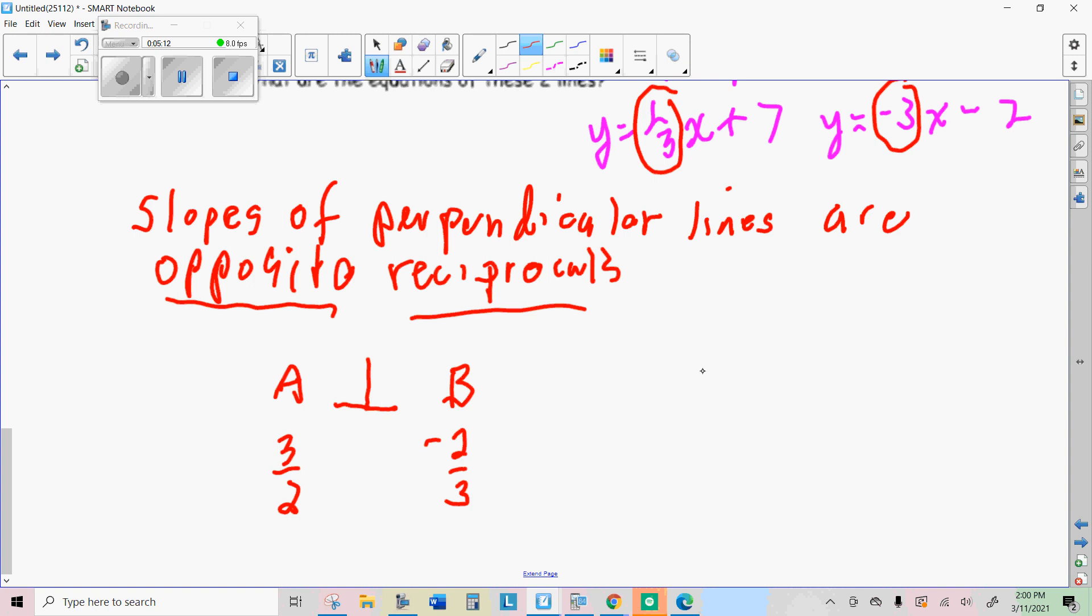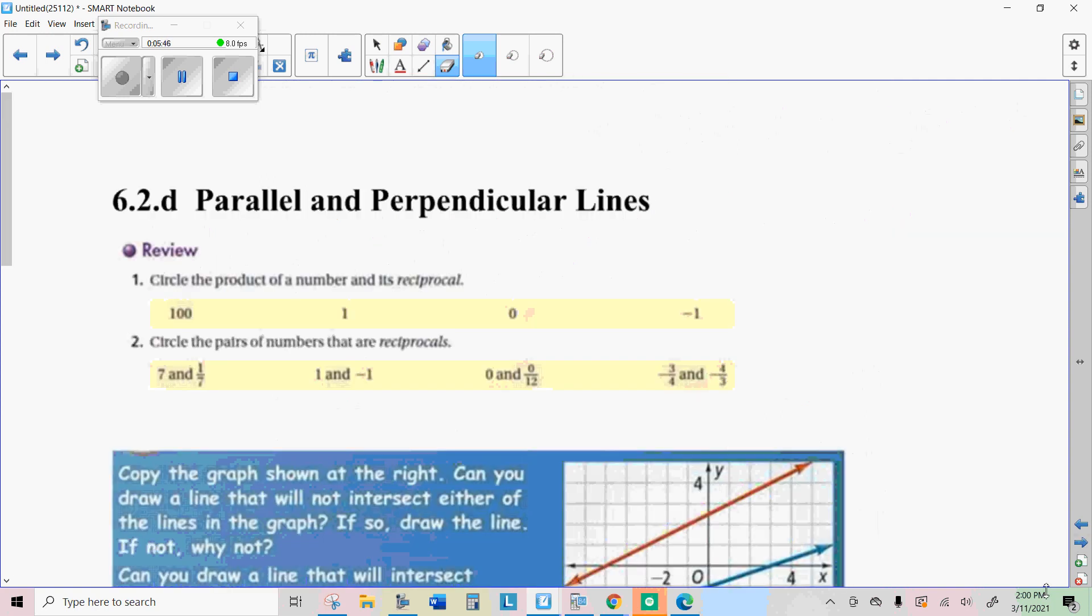Line A would be perpendicular to line B if the slope of line A was four. Now remember, you could write that as four over one. So we're going to flip it. That's the reciprocal one over four, and then put a negative in front of it. So if this was negative four, then the slope of B, if it was perpendicular, would be positive one-fourth. So we're going to use that information to help us on today's lesson.